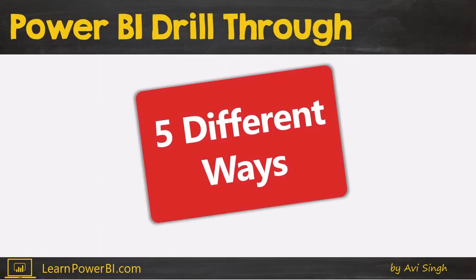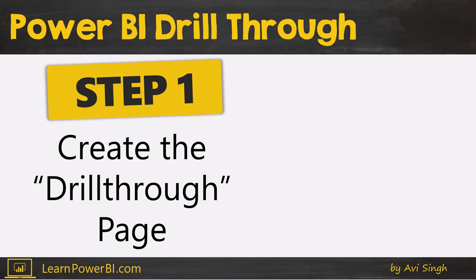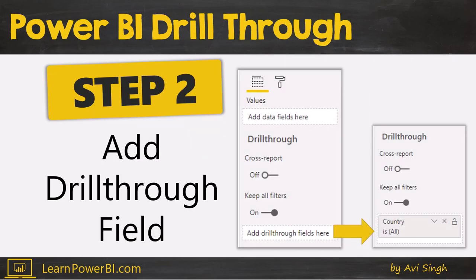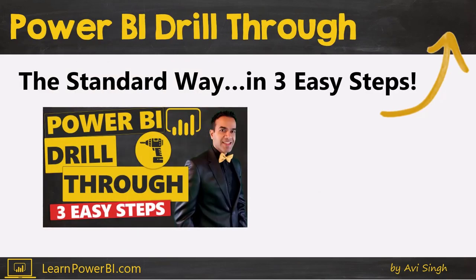Before we talk about the five different ways, there is the standard way which is done in three easy steps, which I've already covered in my last video. If you missed that, you can click in the corner to check out the full video later. We are going to recap the three steps really quick. Step one: you create the drill-through page. Step two: you add the drill-through field on the drill-through field panel. Step three: you right-click and drill through. You can watch the full video later for a step-by-step approach.